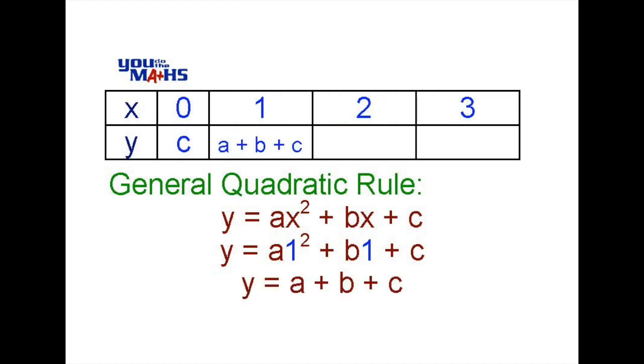When we put a 2 where the x is we get 2 squared is 4, 2 times b is 2b and we end up getting 4a plus 2b plus c. Putting a 3 where the x is we get 3 squared is 9 and 3 times b is 3b so we get 9a plus 3b plus c.